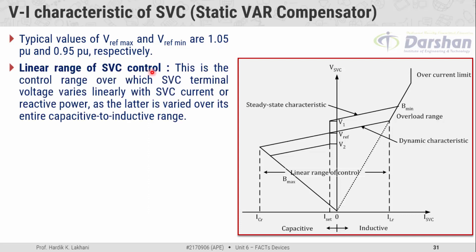The linear range of SVC control is the portion from one point to another that is known as the linear range of control. This is the control range over which the SVC terminal voltage linearly varies with SVC current or reactive power, when the magnitude of the current or reactive power varies over its entire capacity to the inductive range.